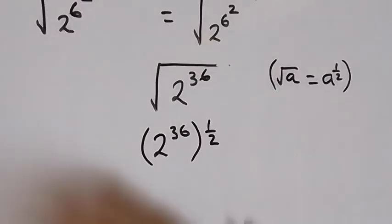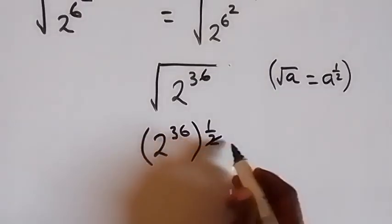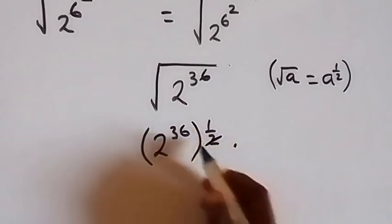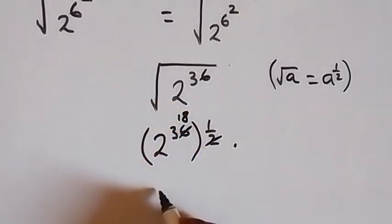From the law of indices as well, this power multiplies, and we can say 2 and 1/2, and 2 in 36, that's 18. And what we have now will be 2 raised to power 18.